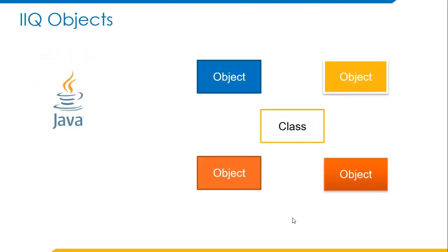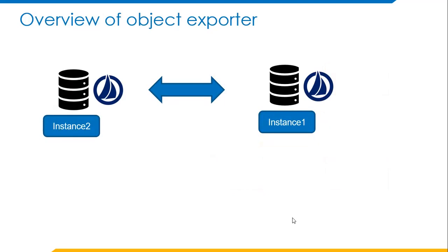SailPoint IdentityIQ is a Java-based application that follows a class and object model. A class is a blueprint of an object. In SailPoint context, consider identity as a class, and identity objects are what we can see in SailPoint IdentityIQ. Whatever user is onboarded onto IdentityIQ is considered as an identity object.